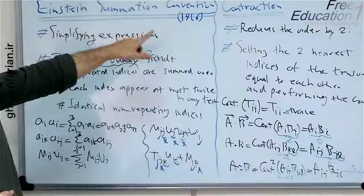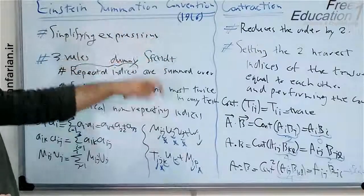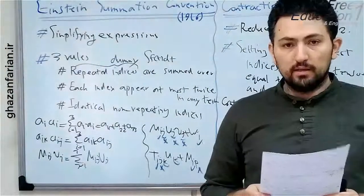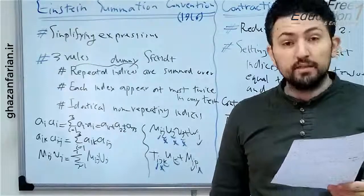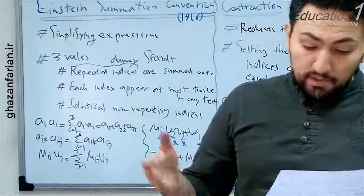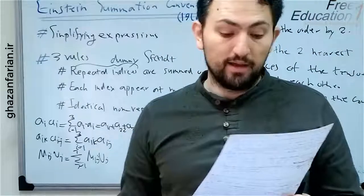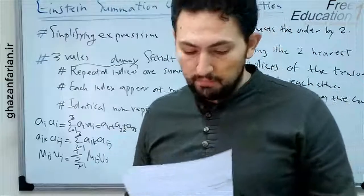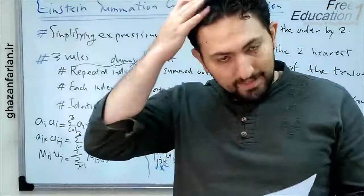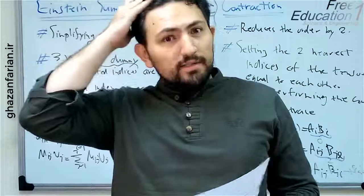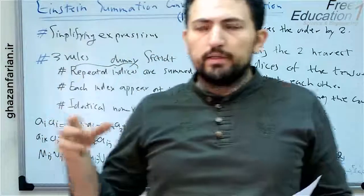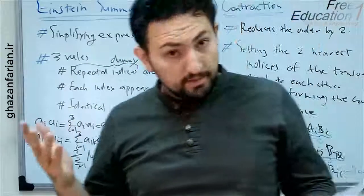Einstein presented this convention around 1916, about 100 years ago. Einstein says: 'I have made a great discovery in mathematics. I have suppressed the summation sign every time that the summation must be made over an index which occurs twice.' This simple statement is very useful in general relativity or in different continuum mechanics applications.